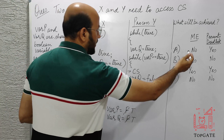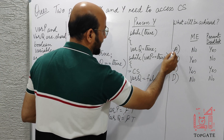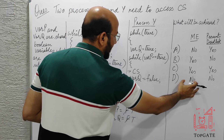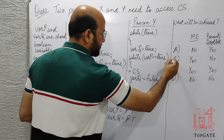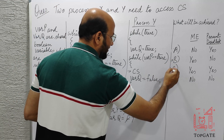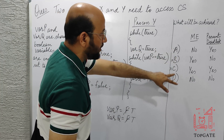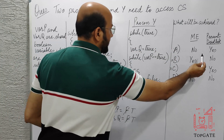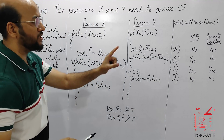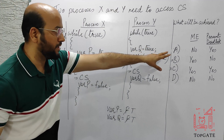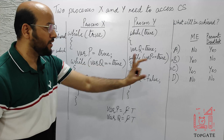Hence, mutual exclusion is not satisfied. Looking at the options, A and D both indicate mutual exclusion is not satisfied, so B and C are eliminated. The answer will be either A or D. Now we just need to check whether there is deadlock or not. If deadlock is prevented, the answer is A; if not, the answer is D.